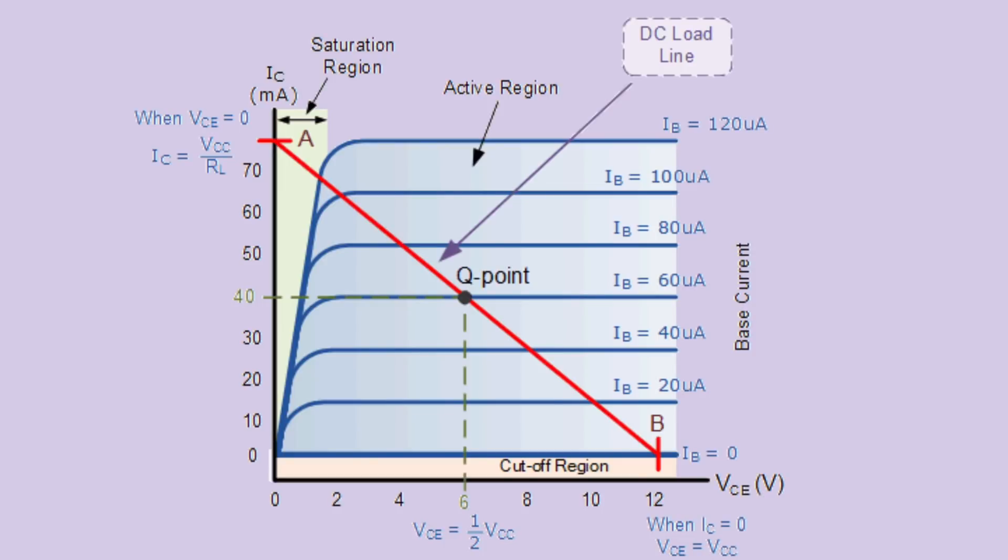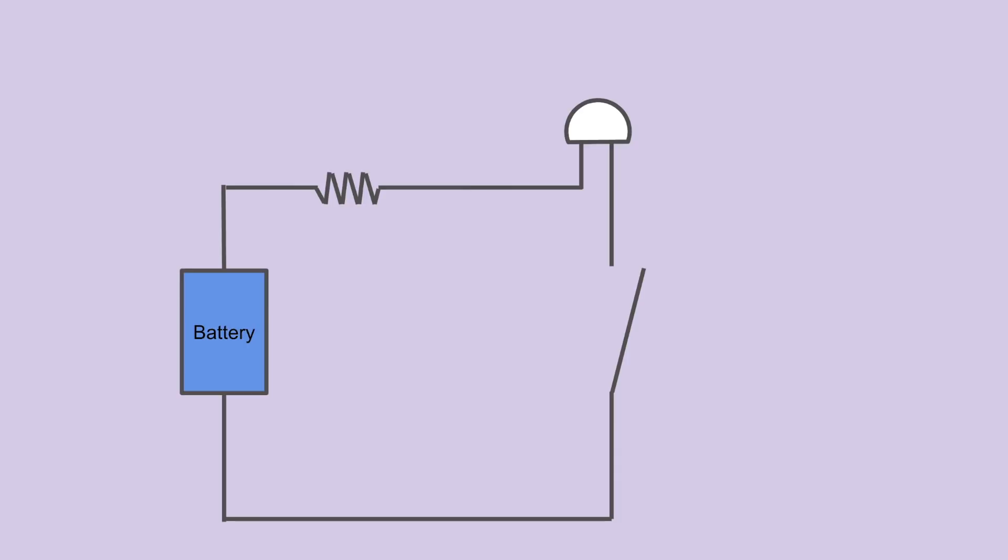It has all sorts of fun properties, but the only thing that is important to us right now is that it can work like a digital switch. A typical switch works like this. If the switch is open, the current does not have a path to travel along, and in this case, the light bulb doesn't light up.